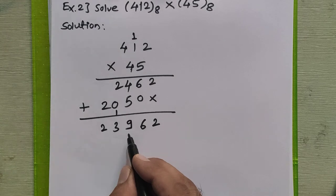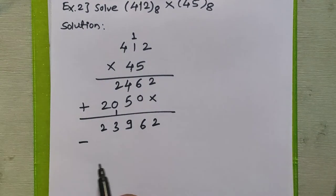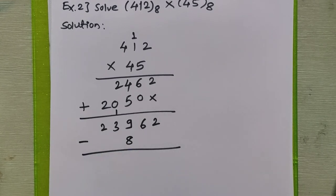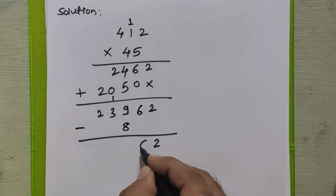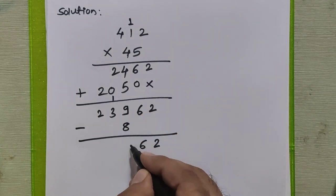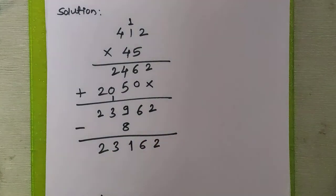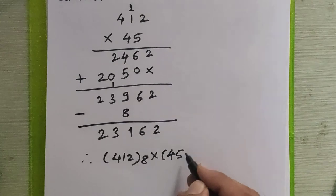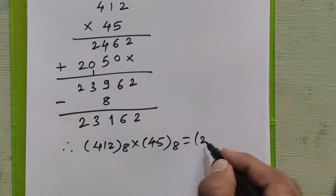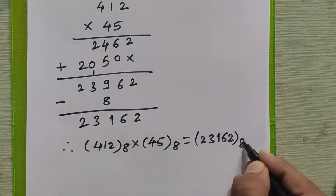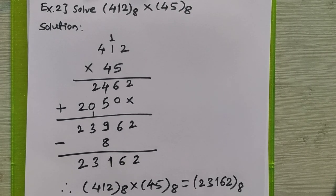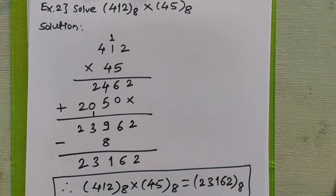There is one invalid digit in the final answer — 9. For any invalid digit, subtract the base 8: 9 minus 8 equals 1. So the final answer is 23162 in octal. Therefore, 412 octal × 45 octal = 23162 in octal. This way we can multiply any two octal numbers directly without converting to any other base.